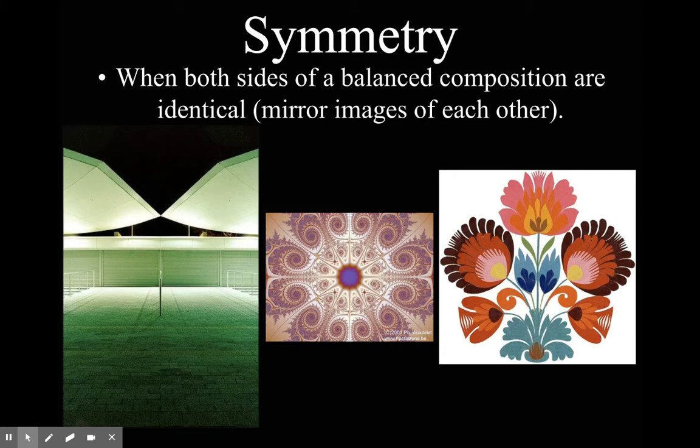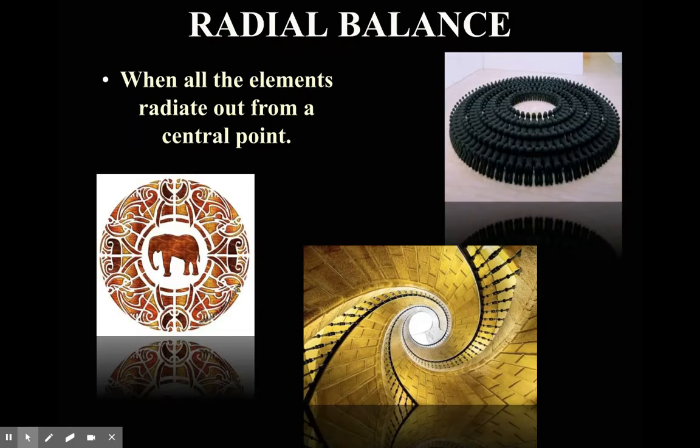A special part of formal balance is called symmetry — that's when both sides of a balanced composition are identical, like mirror images of each other. You'll see this more in design and architecture than in paintings or drawings. Another kind of formal balance is radial balance, where elements radiate out from a central point, creating visual balance in a circular arrangement.